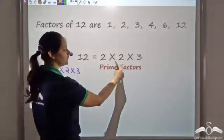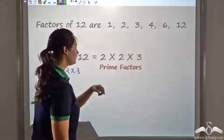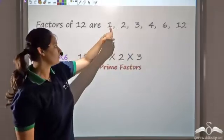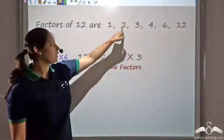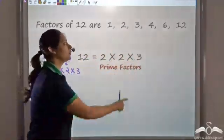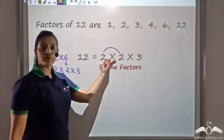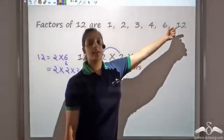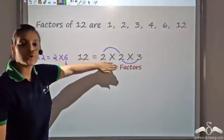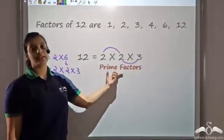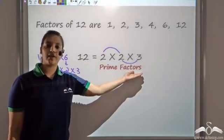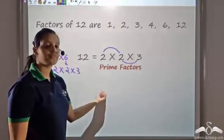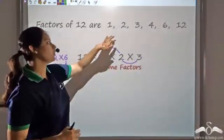Two and three are prime factors of twelve. The remaining factors are nothing but products of these prime factors. One and twelve are factors for sure. Two comes directly from the factorization, three is there as well. Two into two gives four, which is a factor. Two into three gives six, which is also a factor. Multiplying all of them gives twelve, again a factor. So by listing the prime factors and taking all combinations, you can find all factors easily.